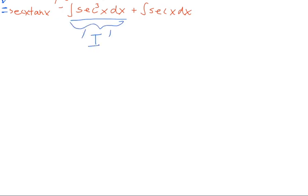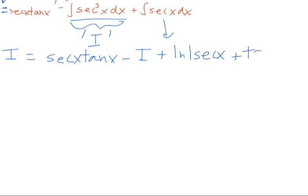I'm just doing that because it saves space, and we can just treat it as a variable, right? So the integral of secant cubed of x is I. So we have I equals secant x tangent x minus I plus the integral of secant x. The integral of secant x, if you remember it off the top of your head, it is the natural log of secant x plus tangent x.